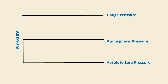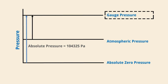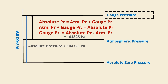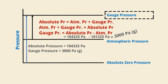One more problem: absolute pressure is given as 104,325 Pascal — find the gauge pressure. From the equation, gauge pressure = absolute pressure minus atmospheric pressure = 104,325 − 101,325 = 3,000 Pascal.